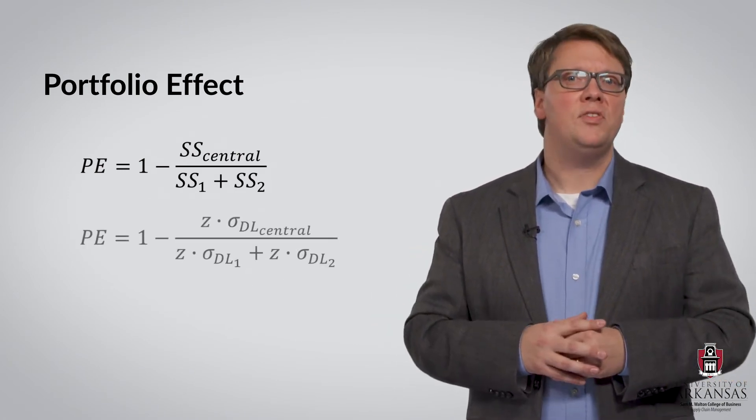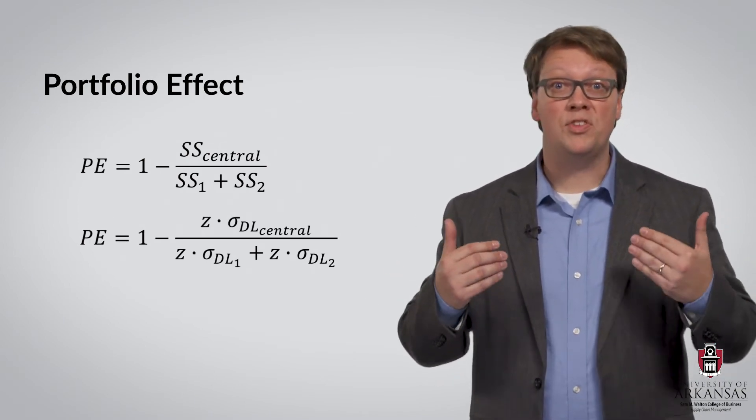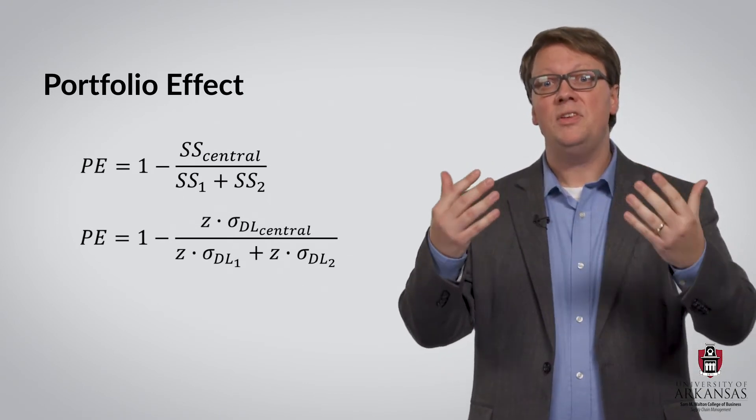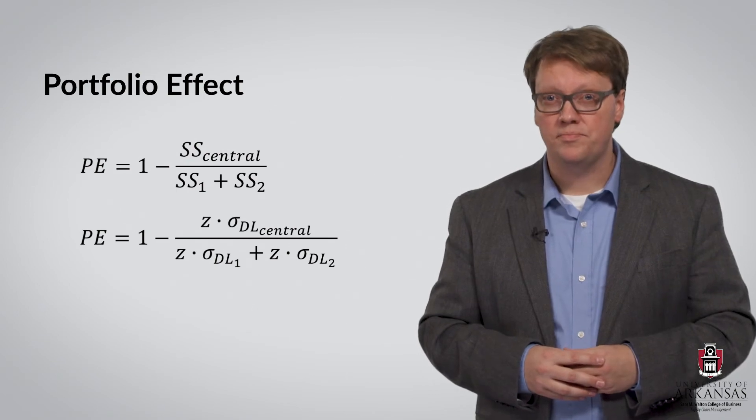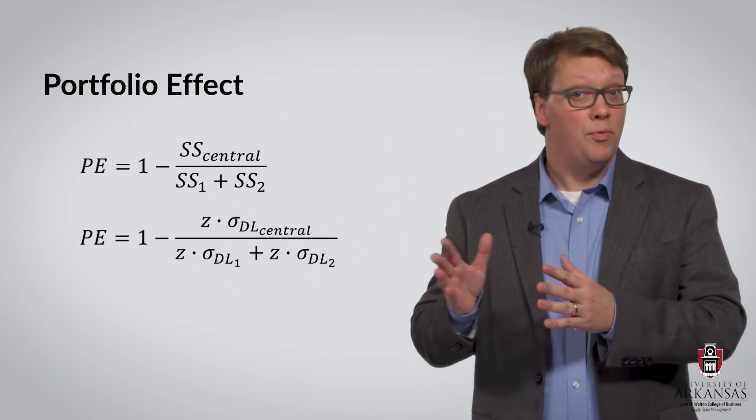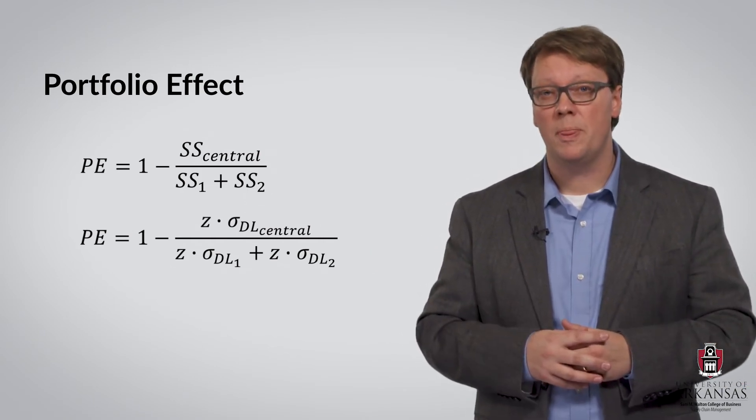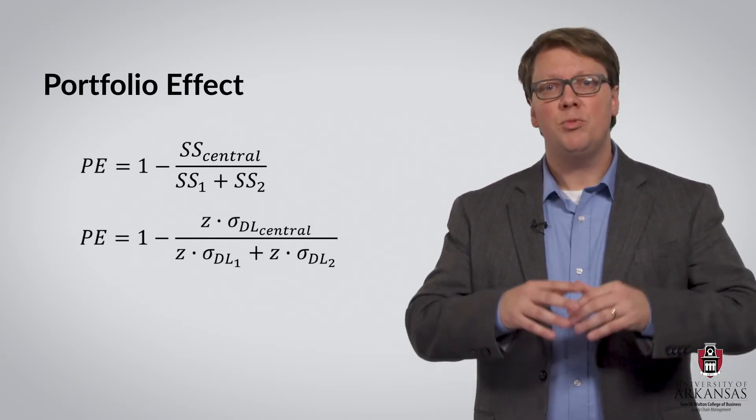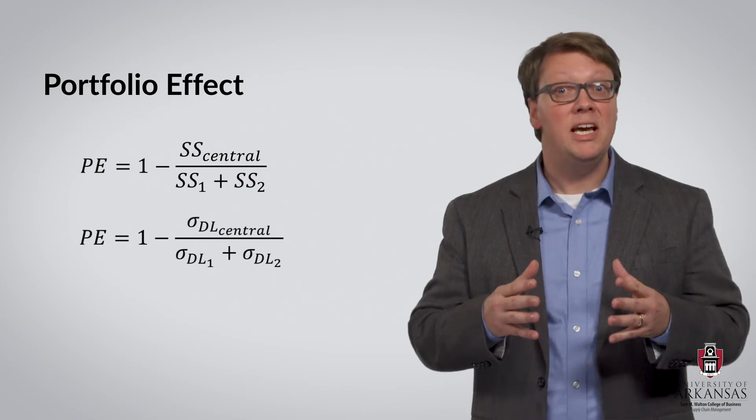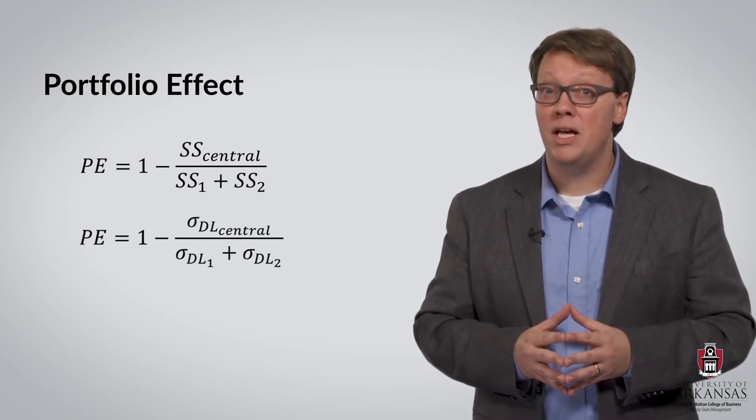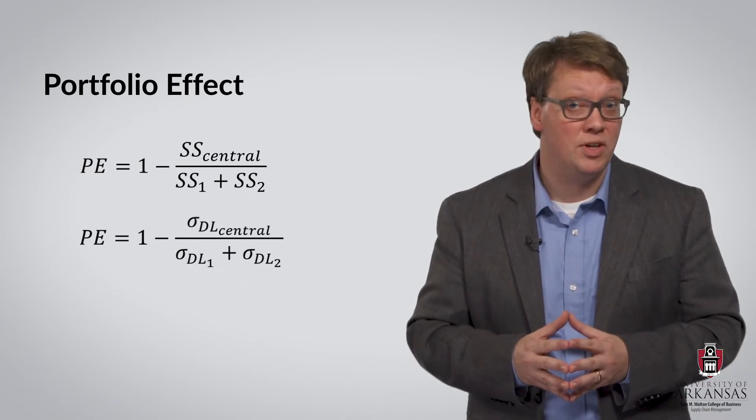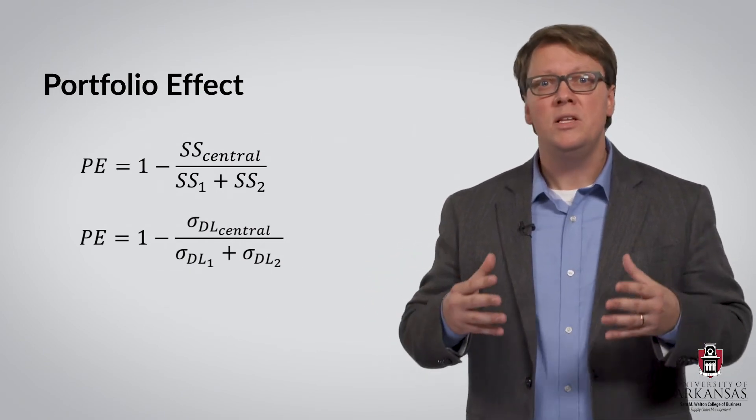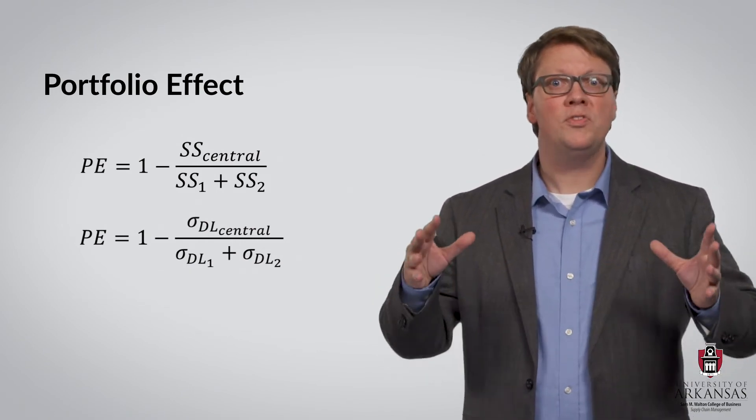Of course, we know that safety stocks are simply the product of the standard normal variant Z that is associated with a given service level and the standard deviation of lead time demand. Let's just say that Z will be the same both before and after DC centralization. This lets us simplify the calculation of the portfolio effect even more. It will be equal to 1 minus sigma DL central, the deviation of lead time demand we now have with a centralized distribution center, divided by the sum of sigma DL1 and sigma DL2, the deviation of lead time demands before centralization.